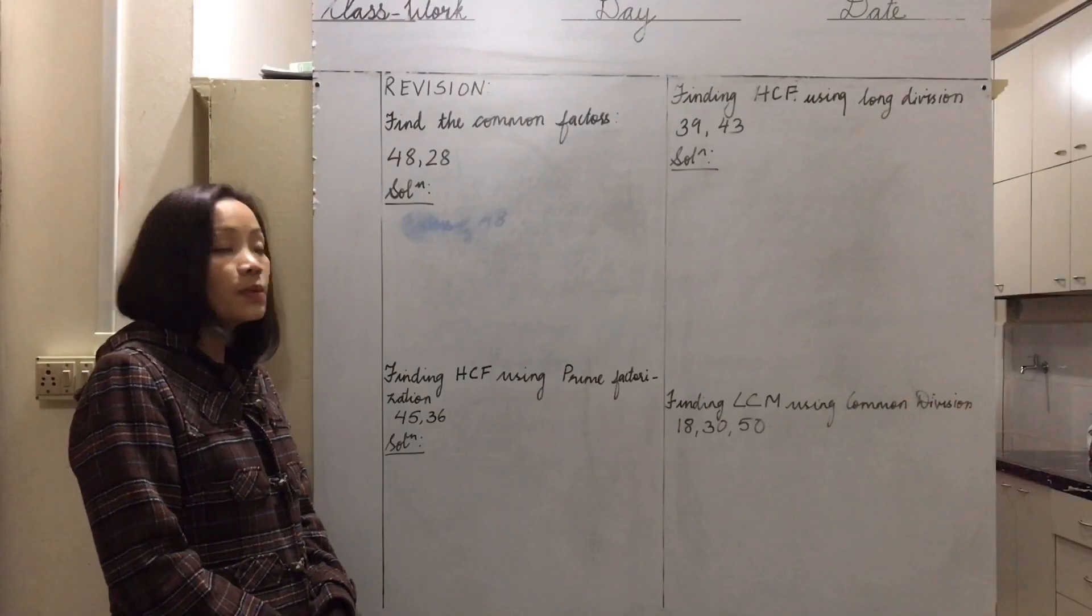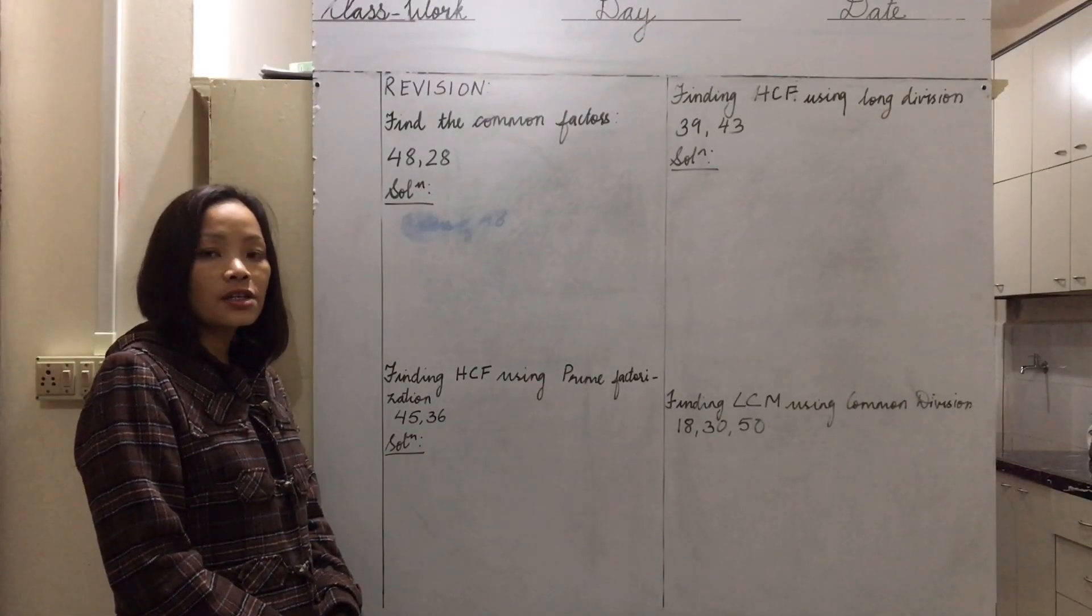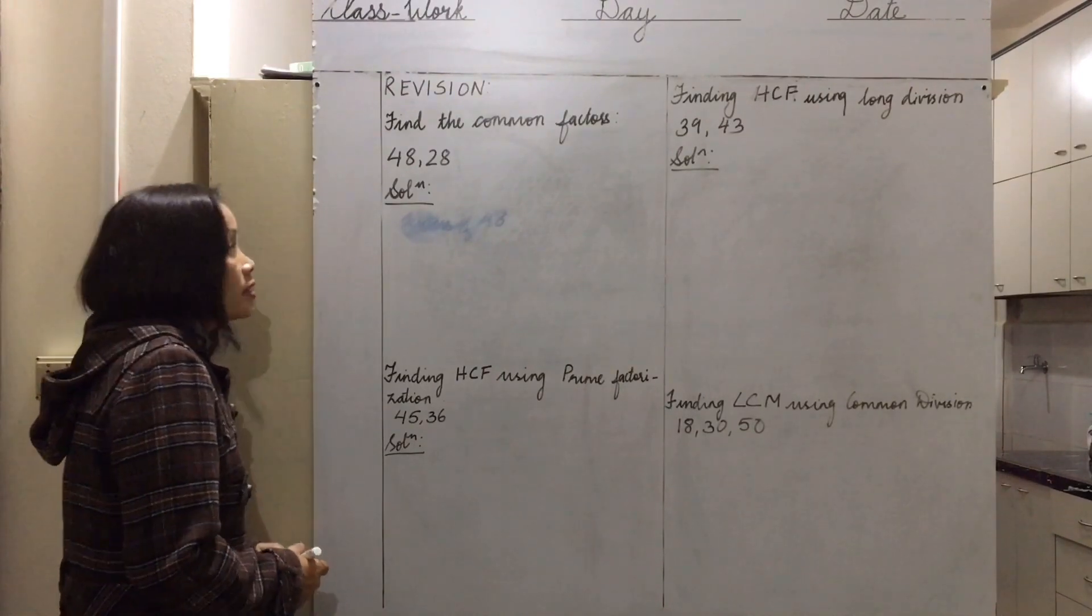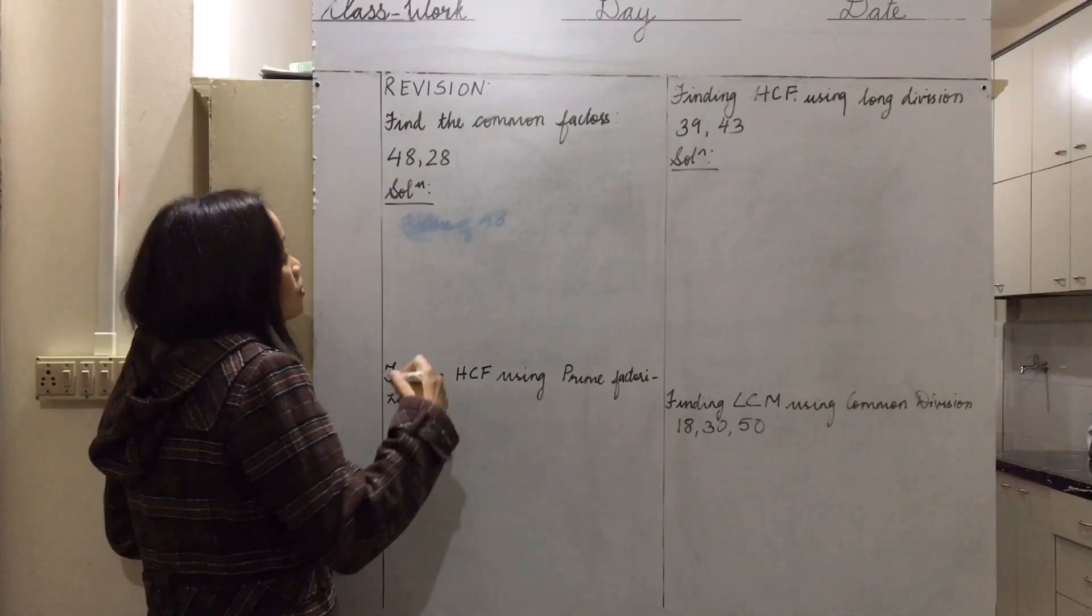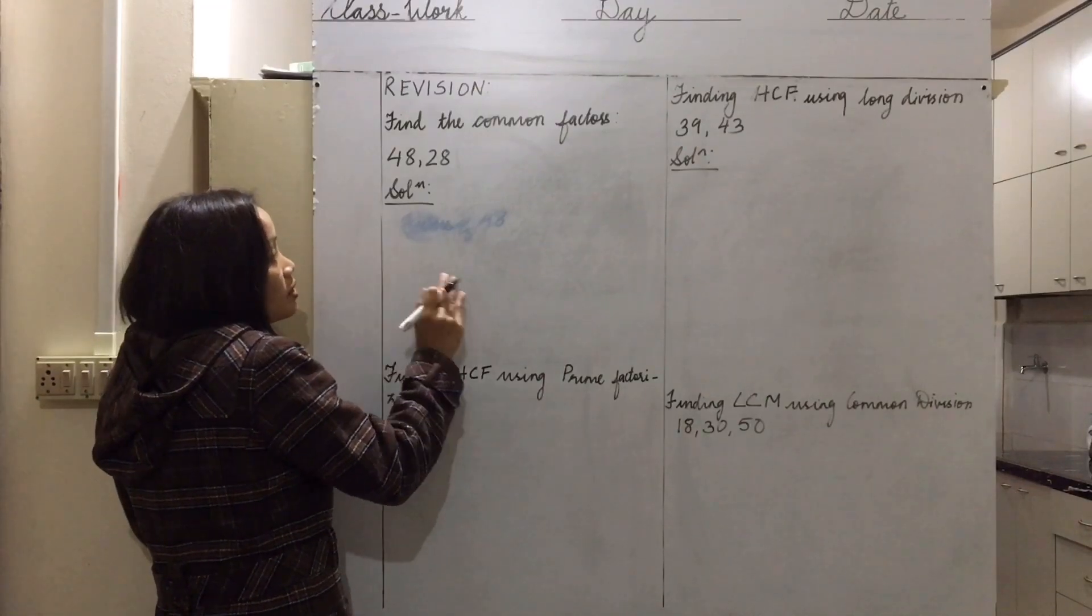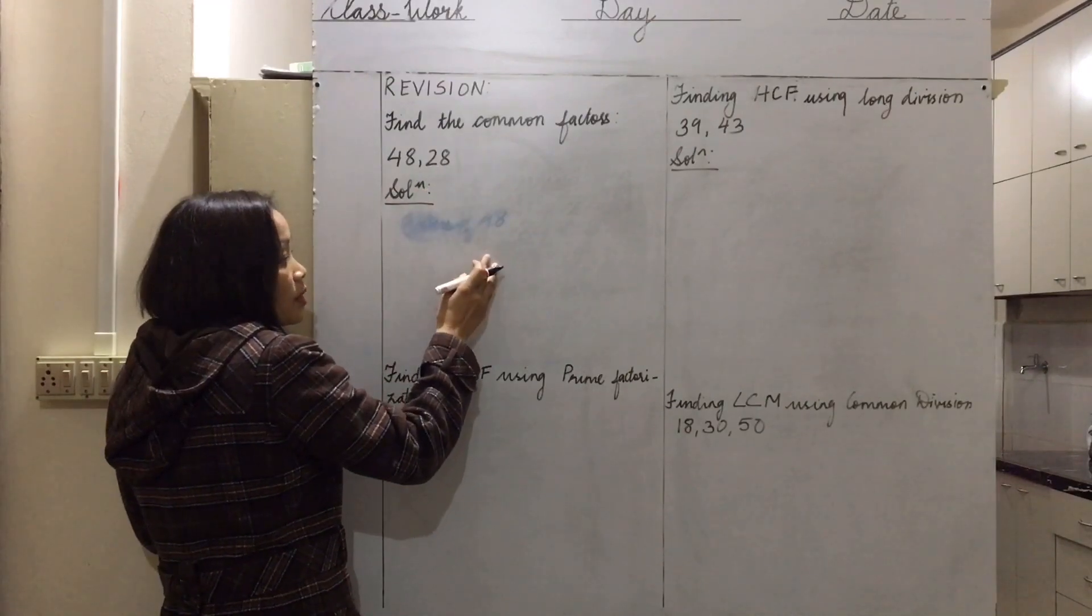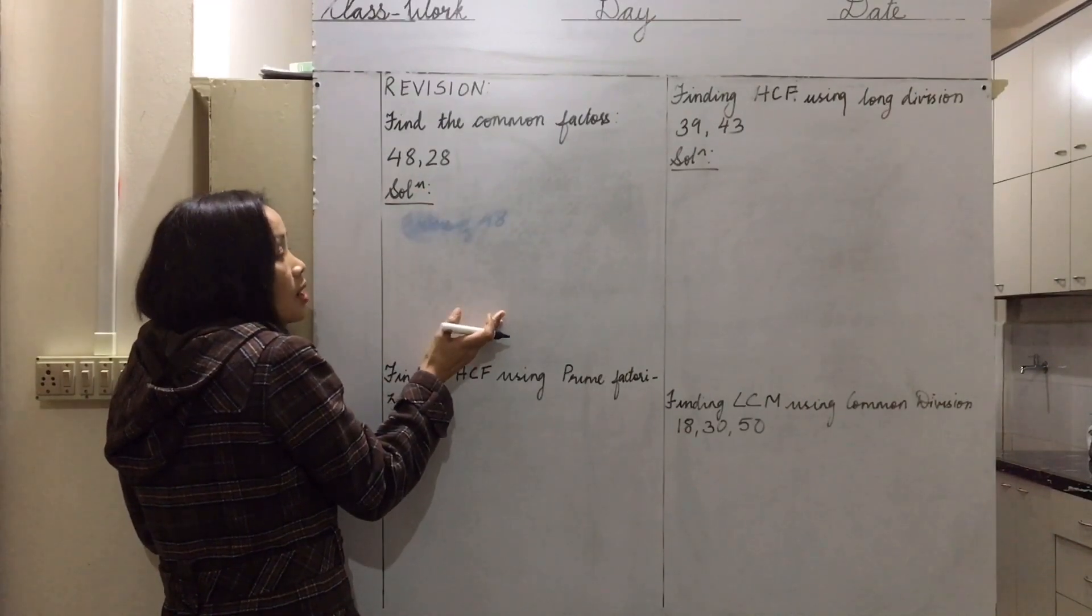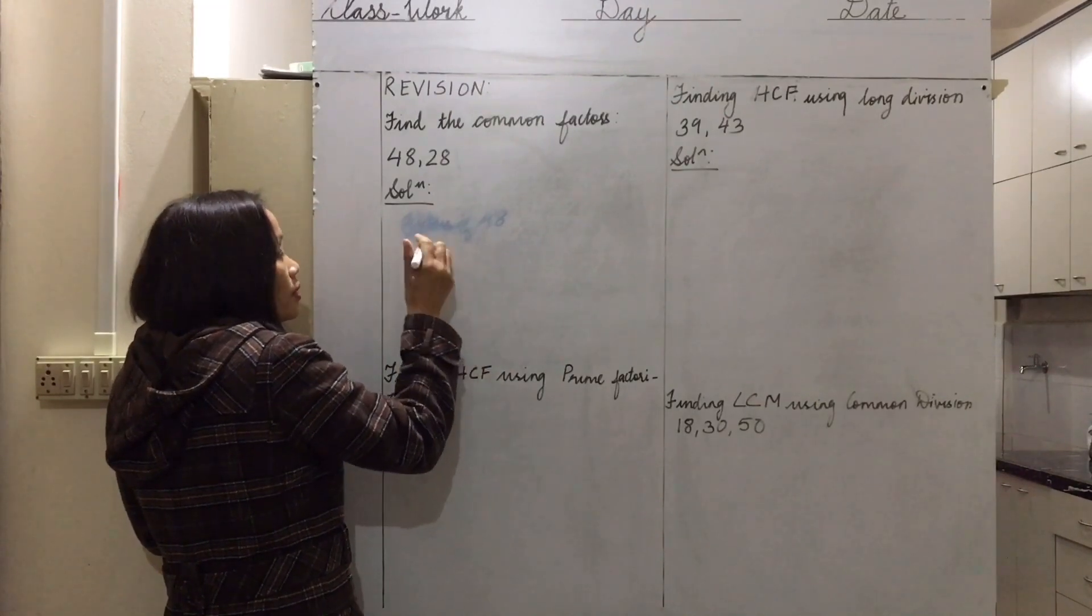Today we will be dealing with finding the common factors and finding HCF and LCM. First finding the common factors of 48 and 28. Here we will be listing out the factors of each number and from there we will be selecting the common factors that are common to the two numbers.